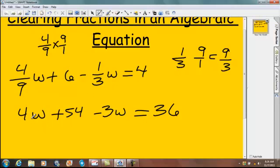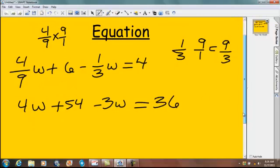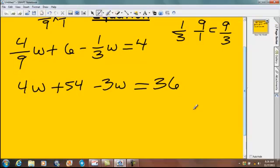Now we have our new problem being 4W plus 54 minus 3W equals 36. Those nasty fractions are all gone. Now this problem for some of you may be easier to solve. Step 1 now, the multi-step equation.